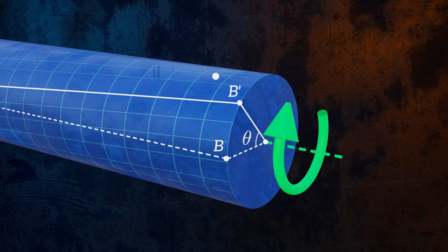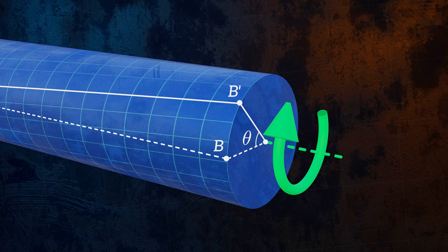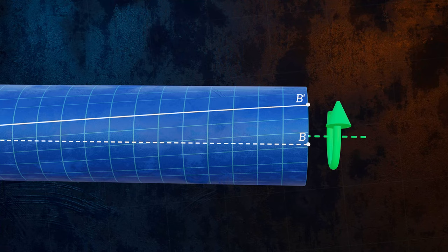Torsion generates stresses and strains within the bar, which we need to be able to calculate so that we can make sure our bar won't fail. To figure out how to calculate these stresses and strains, we can start by observing how a small rectangular element